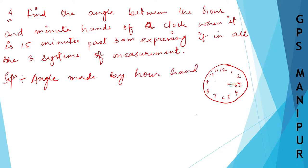First, let me find the angle made by the hour hand — the shorter one. In a complete 12 hours, the hour hand makes 360 degrees. So the angle made by the hour hand is 360 degrees in 12 hours.